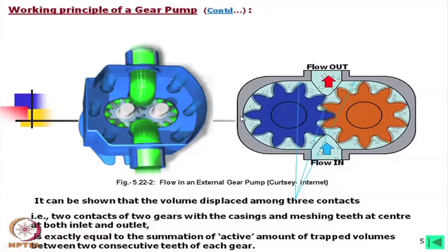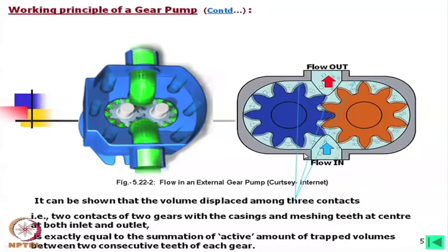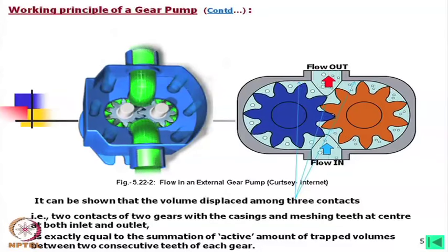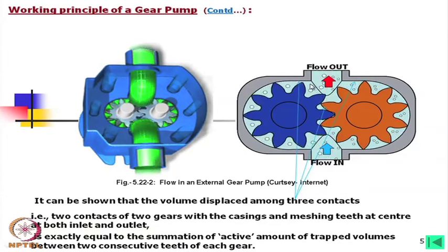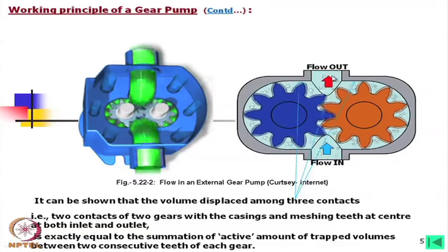Another aspect I would like to discuss: if we consider the pump, here the pressure is low — perhaps atmospheric — and here the pressure is high. If we consider the pressure curve, you can see the pressure is not increasing along the way, and then when it is exposed, suddenly the pressure increases — this is the ideal case. But what actually happens is that there is a small amount of leakage, so the pressure builds up slightly before the sudden exposure to high pressure. This causes some sort of fluid-borne noise.